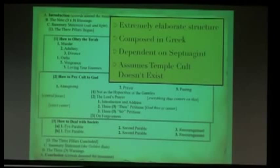One of the reasons we know that is because it's dependent for a lot of its arguments and vocabulary on the Septuagint, the Greek translation of the Old Testament. We know Jesus wasn't walking around Galilee quoting the Septuagint and basing his arguments on the exact wording of the Septuagint. He would have been using Hebrew or Aramaic versions of the Bible. So we know whoever wrote the Sermon on the Mount was not Jesus.